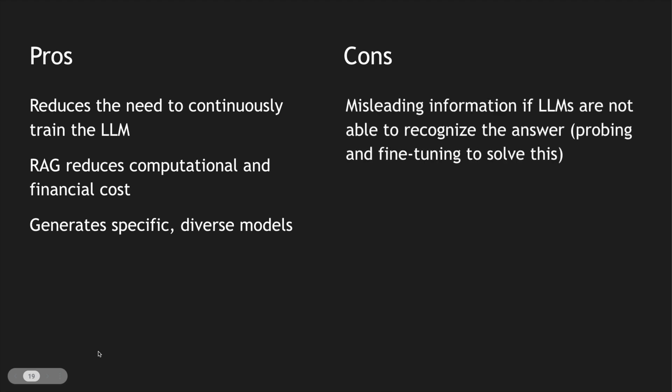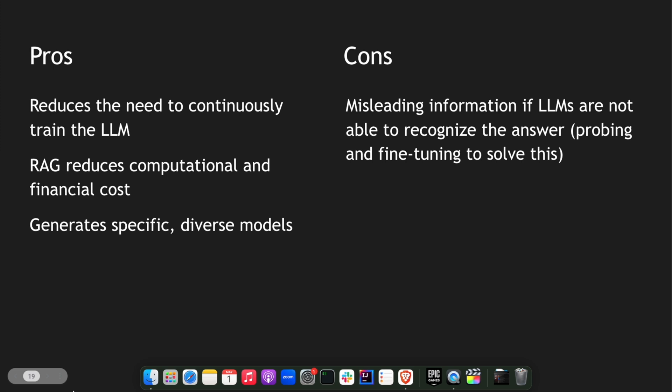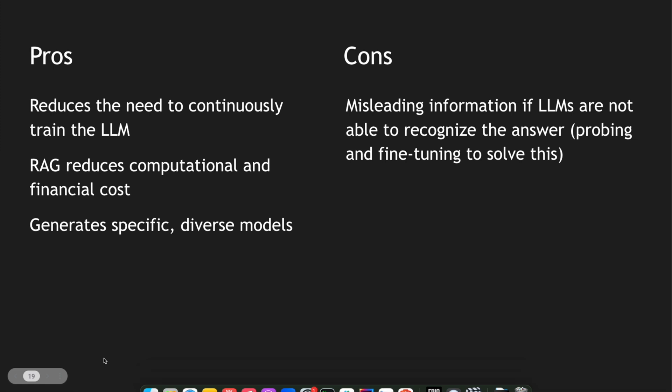Coming to the cons of the RAG architecture — there could be misleading information from the LLM itself. If the LLM is not equipped for specific needs, it cannot answer those specific questions about particular data. Even though you give it specific data, it may not understand it because it was not trained for a specific purpose. So RAG would still need to be fine-tuned. There is no 100% foolproof response coming from a RAG architecture using LLMs, because the LLM itself can sometimes be misleading.